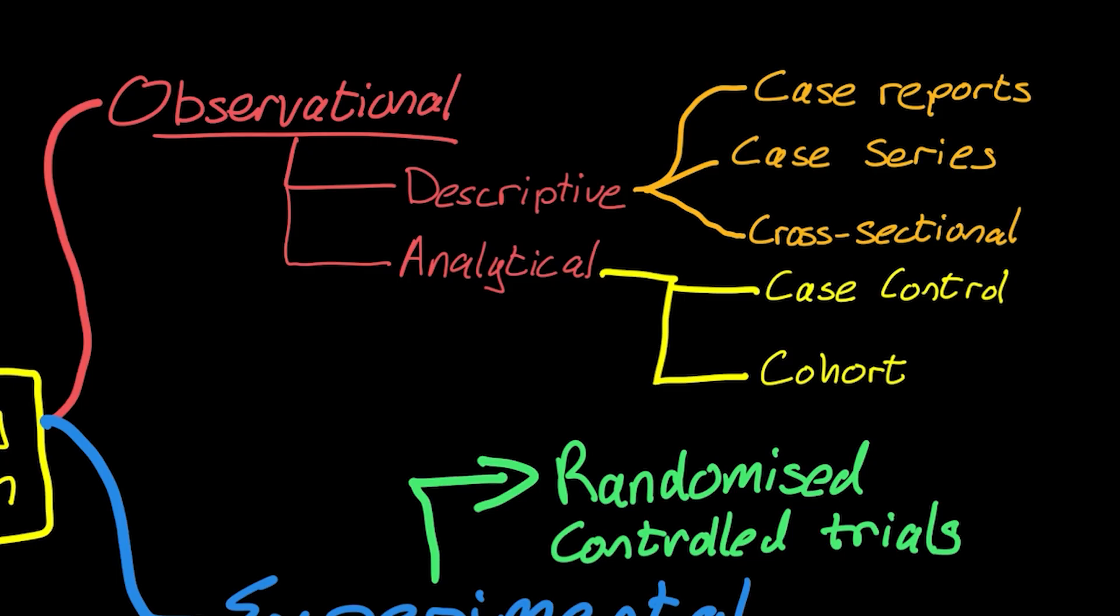Analytical studies are observational. So we're just looking at the world as it is, but we are trying to understand something about the relationship between exposures and outcomes. We're going to look at a lot more detail in the next few videos where we look at case control studies, cohort studies, and RCTs. But these analytical studies are trying to tell us about the relationship between exposures and outcomes.